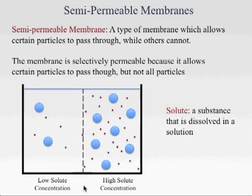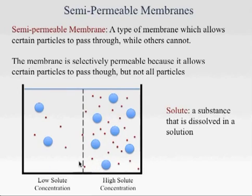Because of the concentration gradient, the solutes are going to want to go from an area of high concentration to an area of low concentration. But since there's a semi-permeable membrane present, it doesn't let all of the solutes through. Only the red solutes can pass through — the blue solutes are just too big. And that's the function of the semi-permeable membrane.